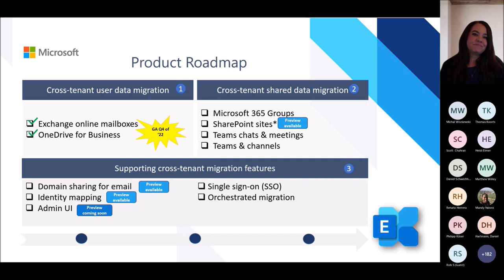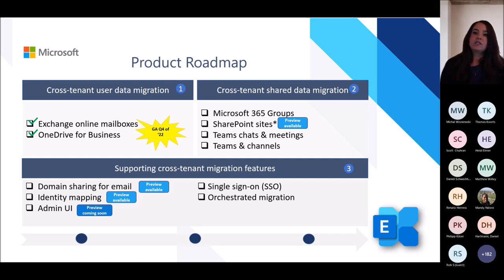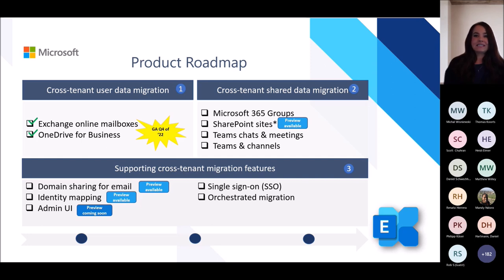While the architecture and existing prerequisites behind these features won't be significantly different from what exists in our previews today, for Exchange mailbox migration at GA we're now going to support the migration of auxiliary archive mailboxes, with new cmdlets available for monitoring the status of each auxiliary archive mailbox being migrated. OneDrive will also support larger five-terabyte OneDrive migrations. For more information about cross-tenant data migration for OneDrive, stay tuned for Ignite.